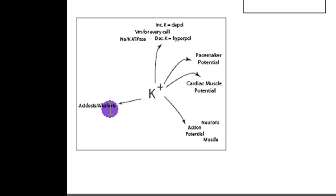Another key point about potassium is its effect on acidosis and alkalosis. Potassium and hydrogen ion exchange across the cell membrane — an alternative theory is that hydrogen affects the sodium-potassium ATPase. In any case, hyperkalemia leads to acidosis, and hypokalemia leads to alkalosis.